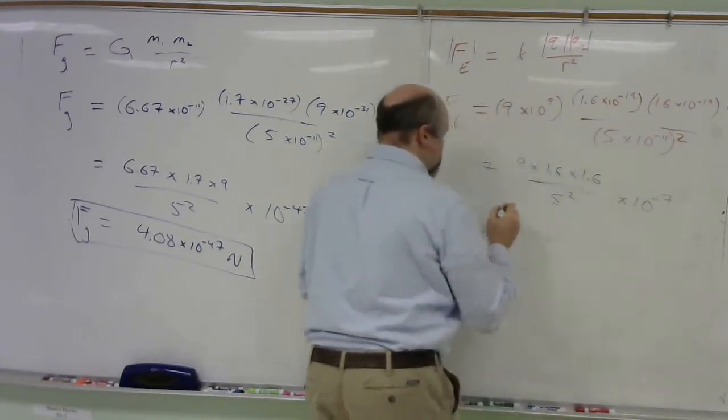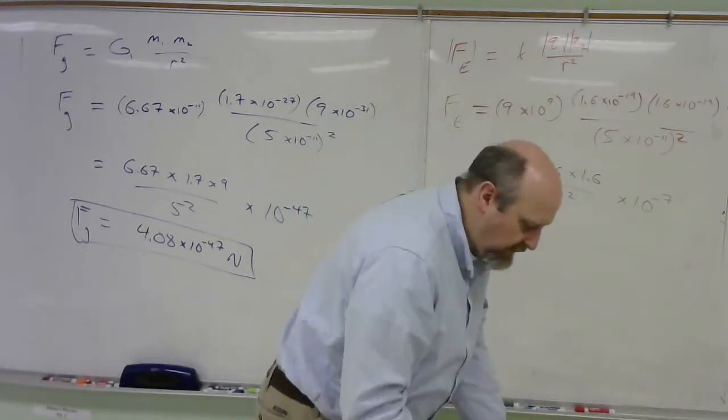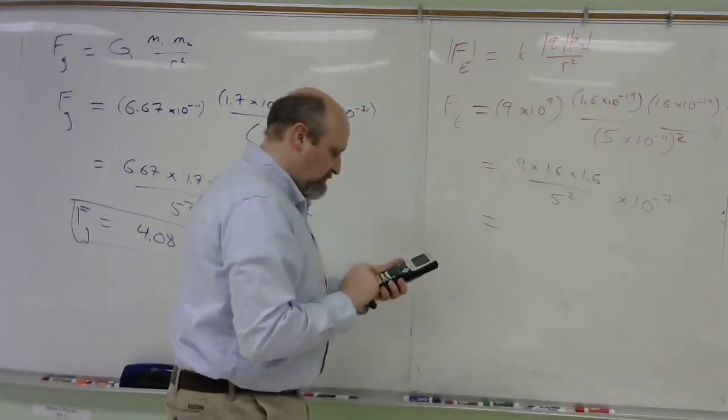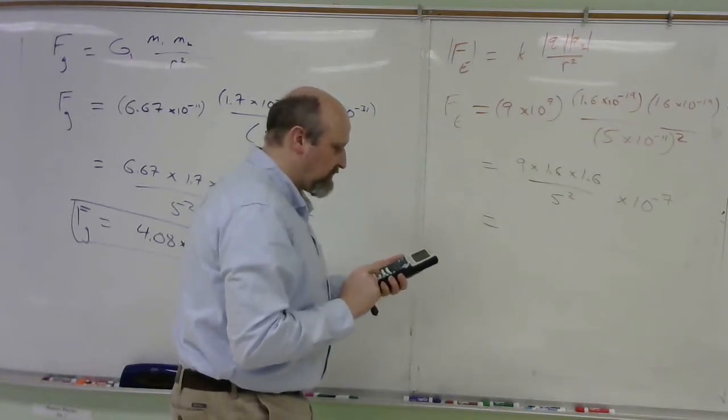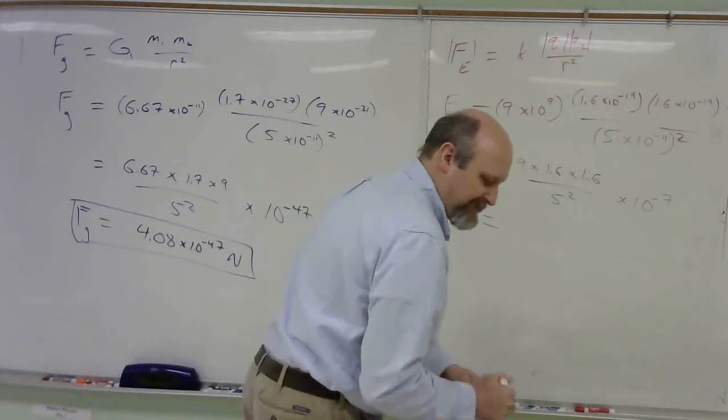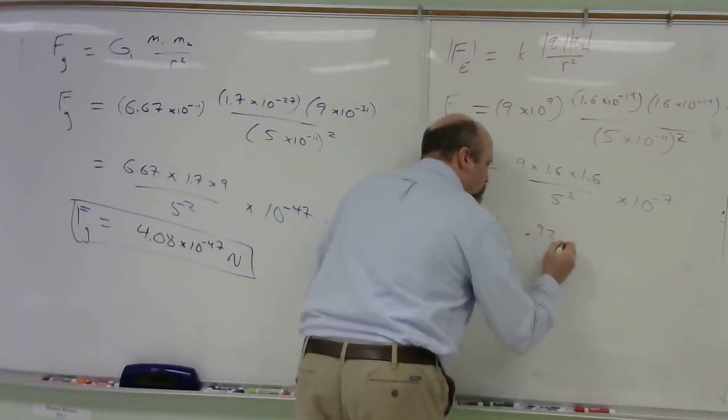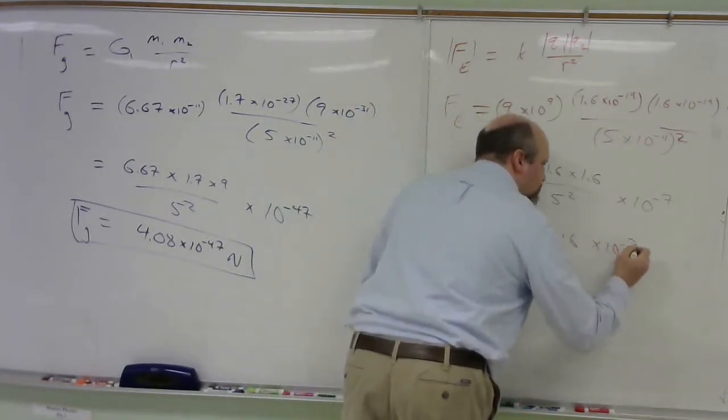Okay. Let's punch this in the calculator. If I do so, 9 times 1.6 times 1.6 divided by 25 gets me 0.9216 times 10 to the negative 7.